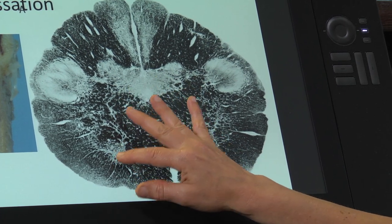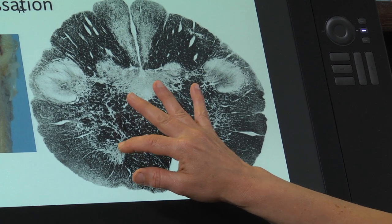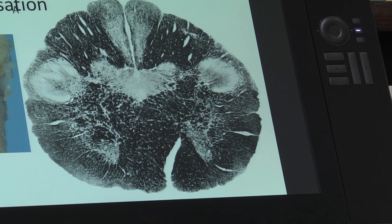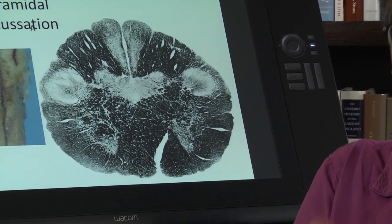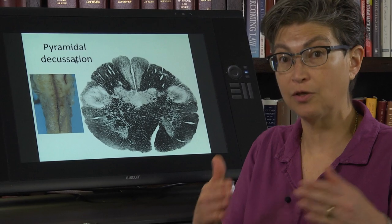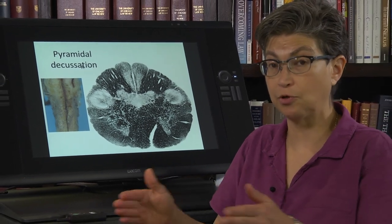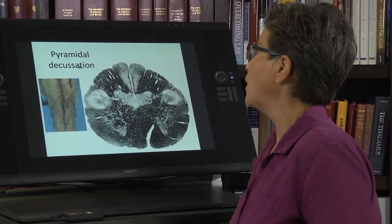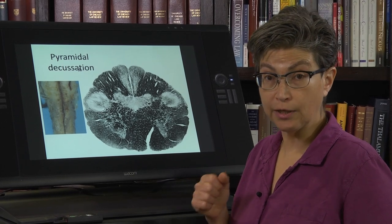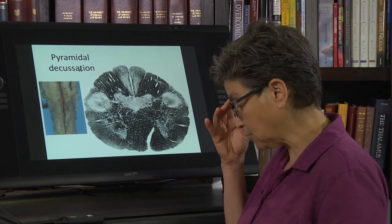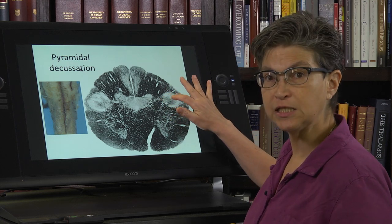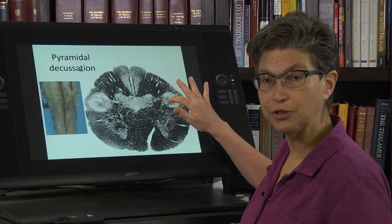The spinal accessory nucleus contains motor neurons that innervate the sternocleidomastoid and trapezius muscles, reaching them through cranial nerve 11, the spinal accessory nerve. The next important cranial nerve nucleus present here is the spinal trigeminal nucleus.